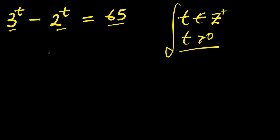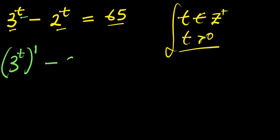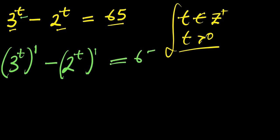Let's recall this problem. We have 3 power t, and I can decide to raise it to the power of 1, which is the same as t times 1, giving us t. Minus 2 power t, raised to the power of 1. If you multiply t times 1, it's the same as t. This equals 65.